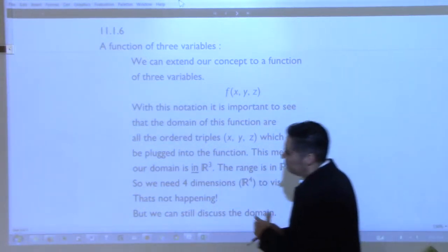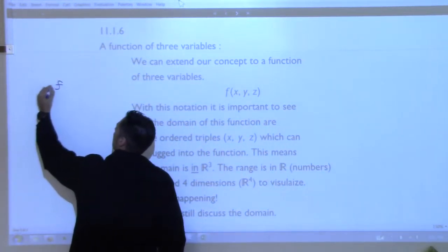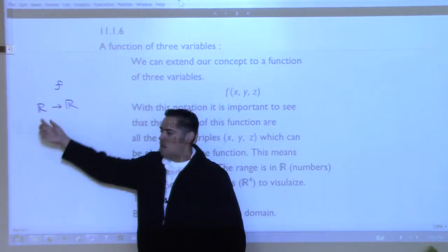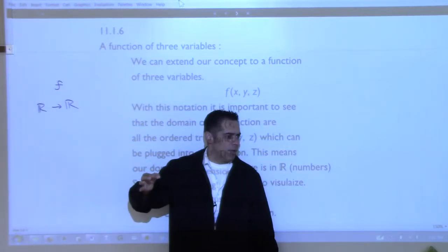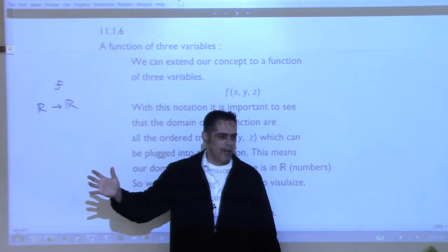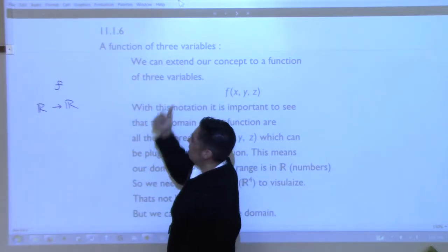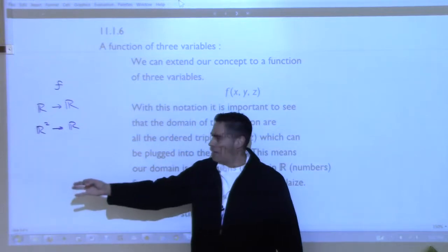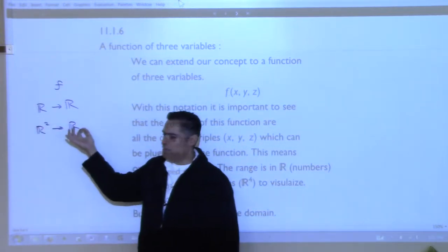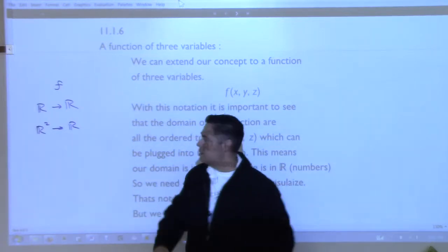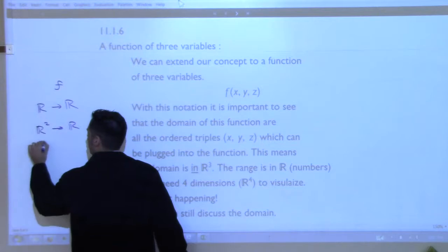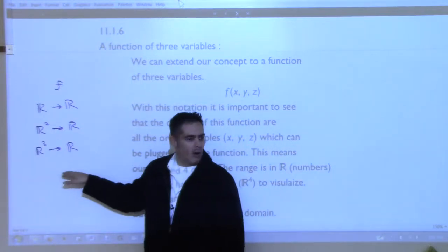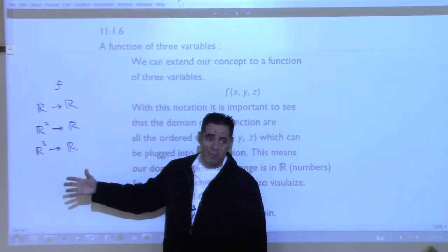For math majors: you can have a standard function that goes from R to R — a number off the real number line taken to another number. That's your standard function from college algebra, like x squared. What we just looked at is going from R2 into R — take an ordered pair, assign a number to it, and you need three dimensions. But now we can also go from R3 into R, and you can keep going: R4 to R, R5 to R, and so on.